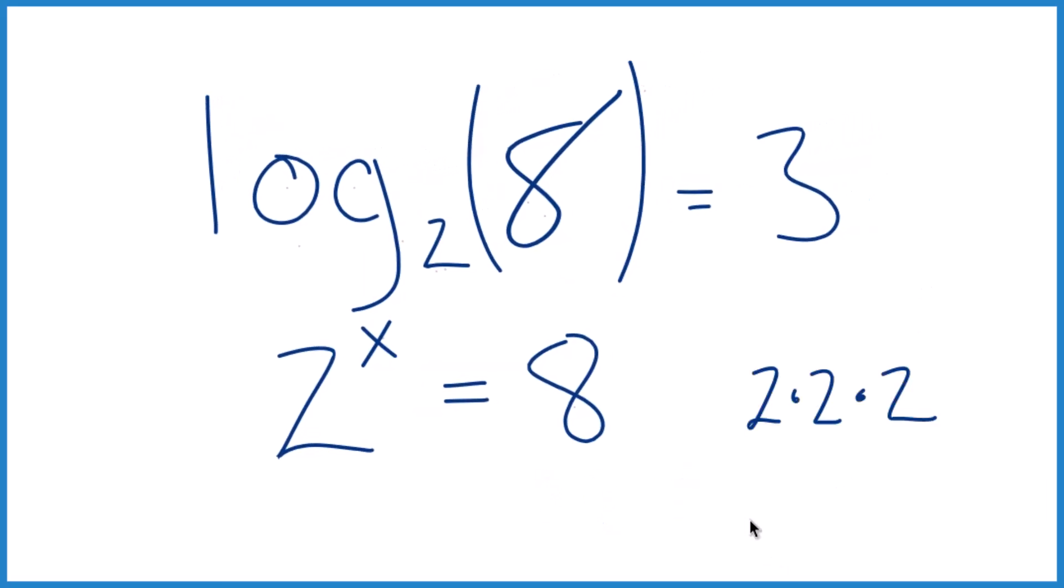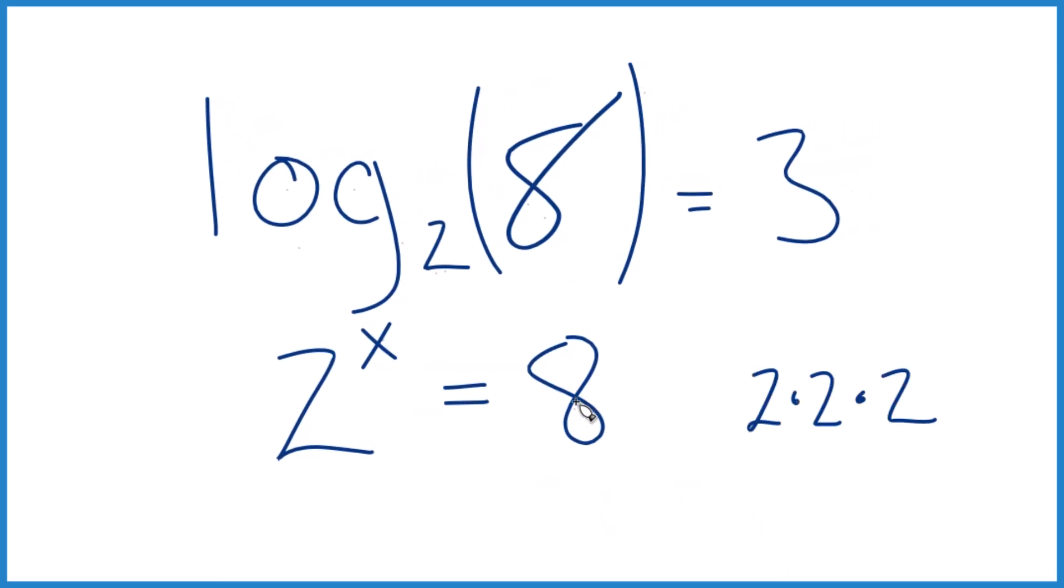Here's another way you could do it. Since we know 8 is 2 times 2 times 2, instead of 8, we could just write 2 to the 1, 2, 3, 2 to the third. That's the same as 8.